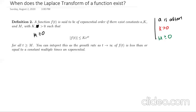Looking at this expression, you can think of this as saying that the function f(t) grows at a rate less than or equal to a constant times an exponential. Our function grows at most as fast as a constant times an exponential. There are functions that grow faster than exponentials — for example, the factorial function grows faster than the exponential function. So not all functions satisfy this. We're looking at functions whose growth rate is at most as fast as a constant times the growth rate of exponentials.